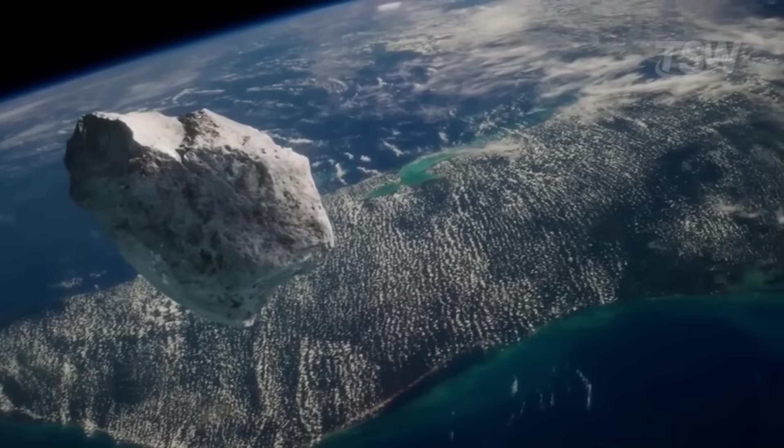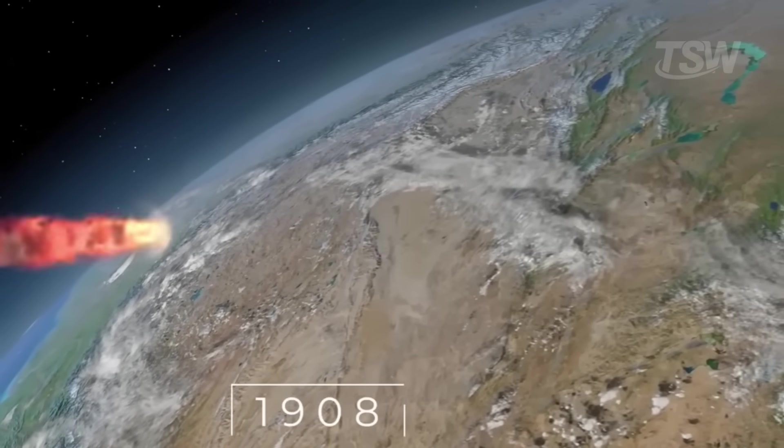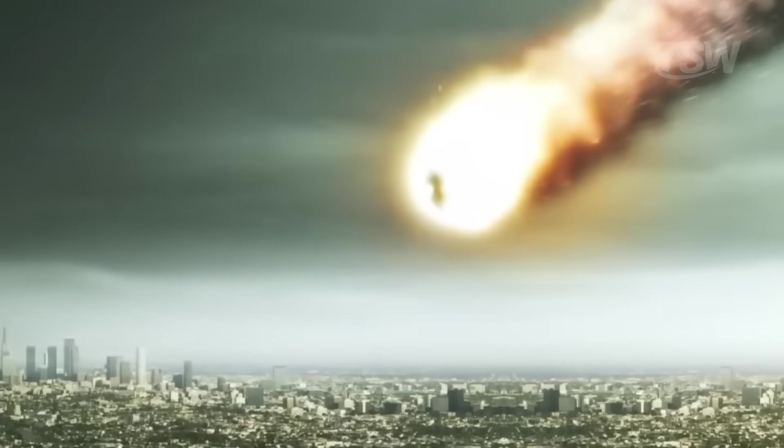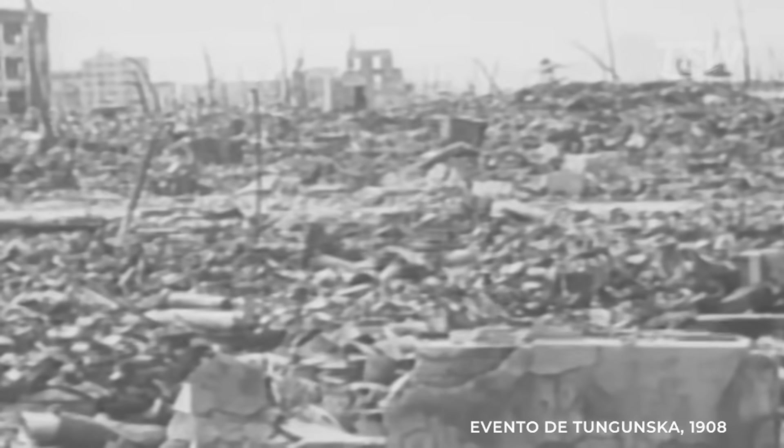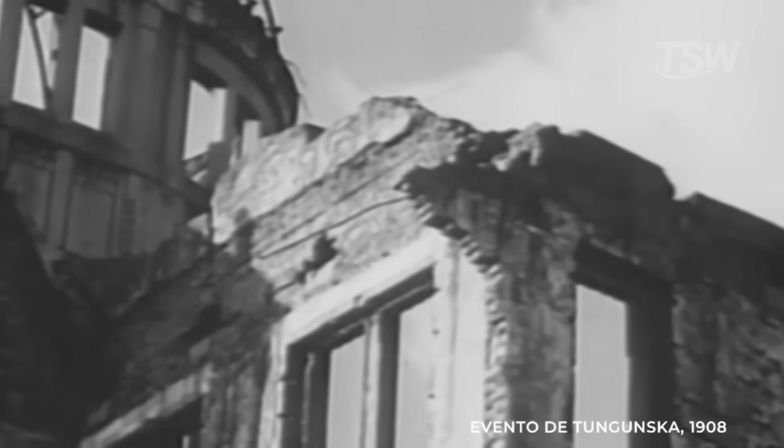We know from Earth's history how much damage impacts can do. In 1908, for example, a colossal explosion shook the Tunguska region in Siberia. Trees were flattened across hundreds of square kilometers, windows shattered at great distances, and the energy released rivaled that of large modern bombs. There was no crater – it's believed the object exploded in the atmosphere – but the message was clear. You don't need a gigantic asteroid to cause real harm.